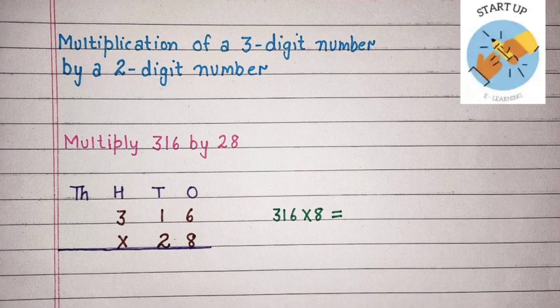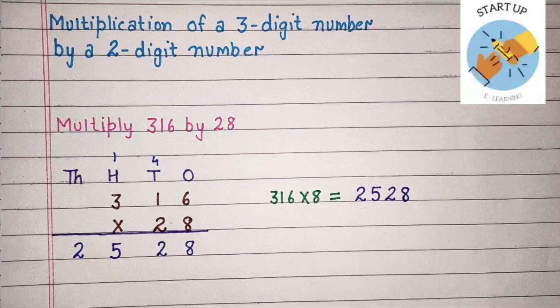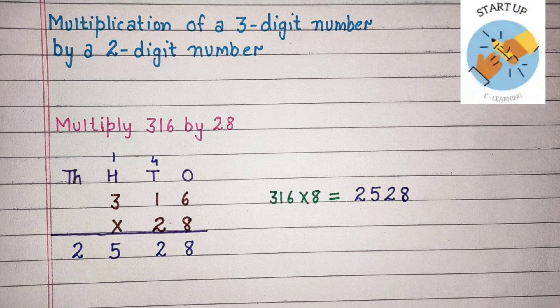Always start the multiplication sum from 1's place. So now we will multiply 316 by 8. 8 will be multiplied by the digit at the 1's place: 8 × 6 = 48. 8 will be written under 1's place and 4 will be carried on 10's. Now 8 will be multiplied by the digit at the 10's place: 8 ones are 8, plus 4 which were carried, is equal to 12. 2 will be written under 10's place and 1 will be carried on 100's. Now 8 will be multiplied by the digit at the 100's place: 8 × 3 = 24, plus 1 carried, is equal to 25. When we have multiplied 316 by 8, we got the product 2528. It will be called the first partial product.